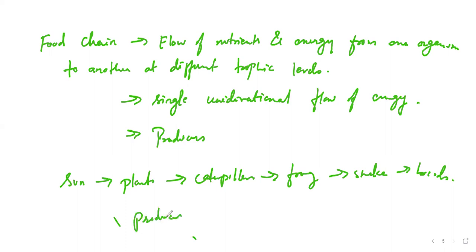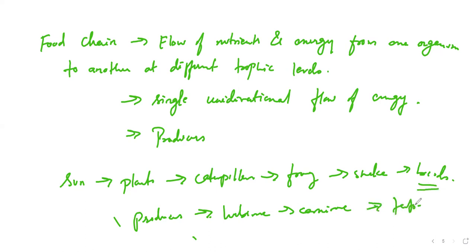The food chain can be written as: producers → herbivore → carnivore. If you are having two carnivores — primary, secondary, tertiary — you can add them. Here the birds will be the tertiary carnivore. This is how the energy as well as nutrition is transferred from one trophic level to the next trophic level.